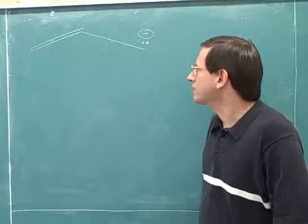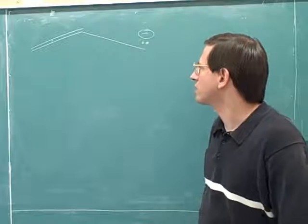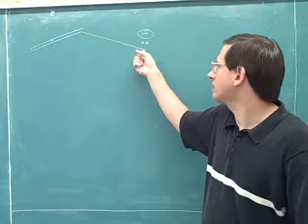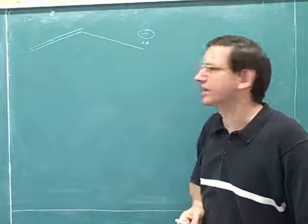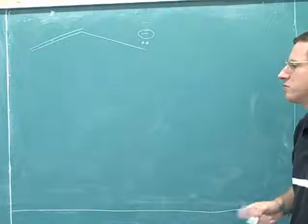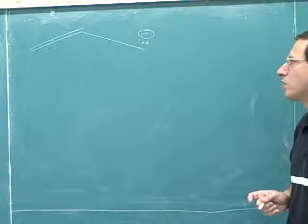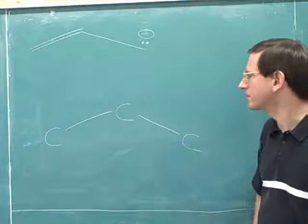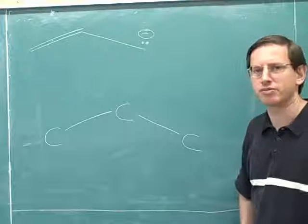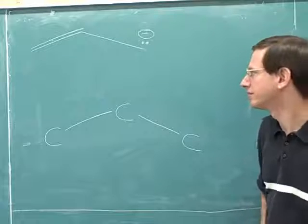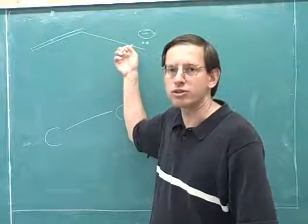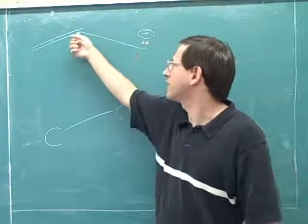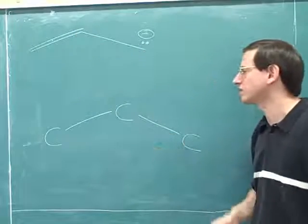Now we'll think about another example. Here we have a three-carbon molecule. These two carbons have a double bond between them, and this carbon over here is an anion — it's got a lone pair and a negative charge. We're going to try to draw what the orbitals look like here. For simplicity, I'm not going to draw the hydrogens — just the p orbitals. You can see that all of these carbons are sp2 hybridized. This one has a lone pair and is connected to an sp2 atom, so it's also sp2. So each of these carbons has one p orbital.